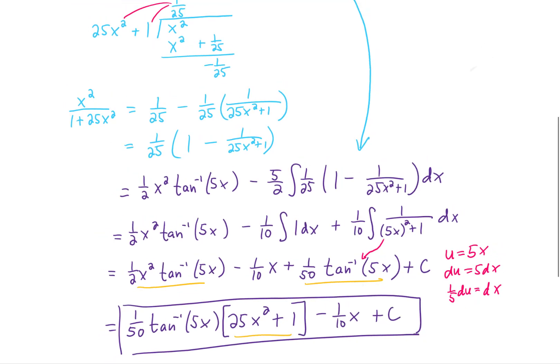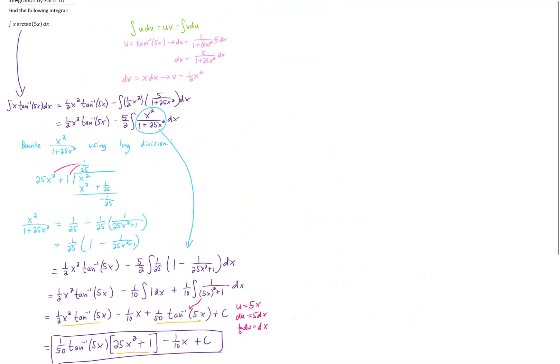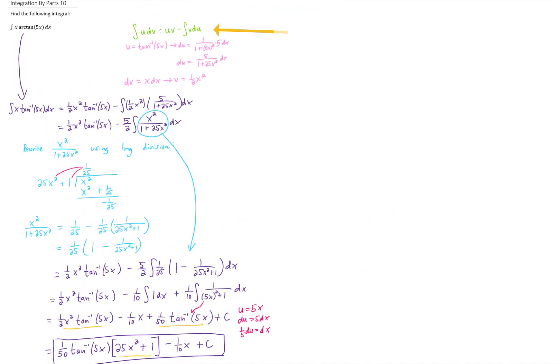I'm going to zoom out on this problem so that you can see the whole thing. I'll just say really quickly what we just did there. We started with an integration by parts problem. We chose u as our inverse tangent of 5x and our dv as x dx. What that gave us then was an integral that required polynomial long division to rewrite it in a form that we could integrate. Once we rewrote this in a form that we could integrate,